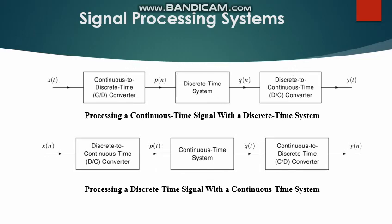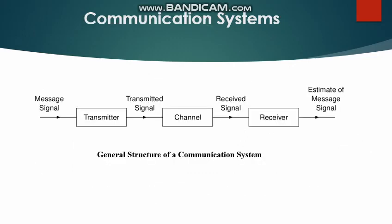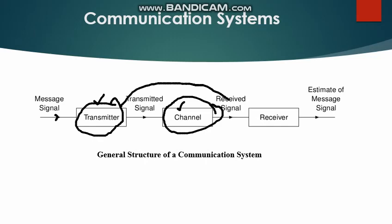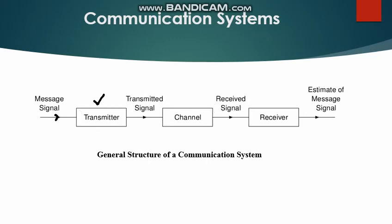Now, coming to communication systems — there is a message signal. You need a transmitter to transmit this signal to the channel, and the channel is the main medium here. The signal is processed at the transmitter and sent across the channel to the receiver. The receiver receives the signal and translates it to estimate the original message signal. That is the general structure of a communication system. The main system changes rely on the transmitter and receiver, not the channel, because the channel can be wired or wireless and we have very little chance to change it.